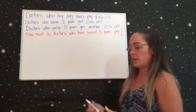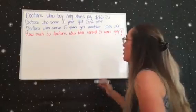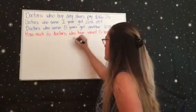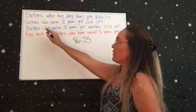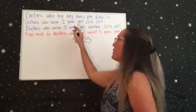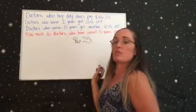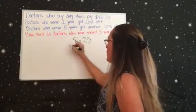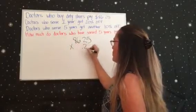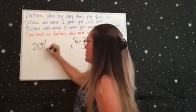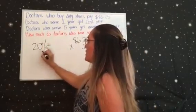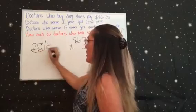So first let's start with the original price and we want to figure out if they only served one year, they're going to get 20% off. So we're going to multiply by 0.20. When you have a percentage you just go over two times and you turn that into a decimal.